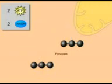For each glucose molecule broken down during glycolysis, a net of two ATPs are formed, along with two NADH molecules.